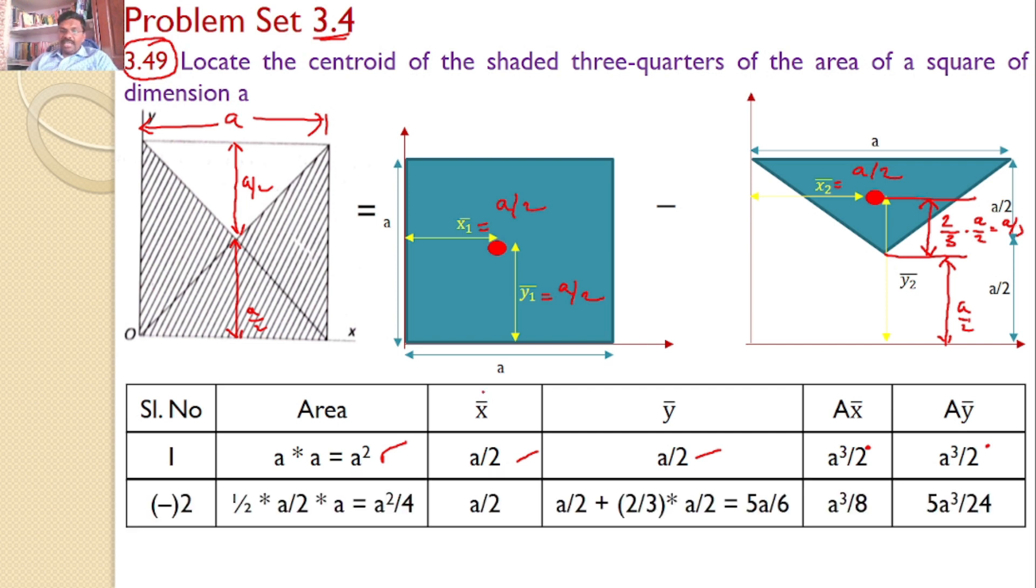and you know this distance is equal to a by 2. So y2 bar is equal to a by 2 plus 2 by 3 times a by 2. I can calculate, but this is minus. We need to subtract. So area is to be minus. Half base into height, because it is area of the triangle. Half base is a by 2. Height is a. So it is a squared by 4, and x2 bar is equal to a by 2, and y2 bar is equal to a by 2 plus 2 by 3 into a by 2, as we discussed, is equal to 5a by 6.